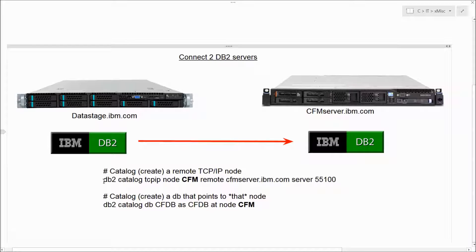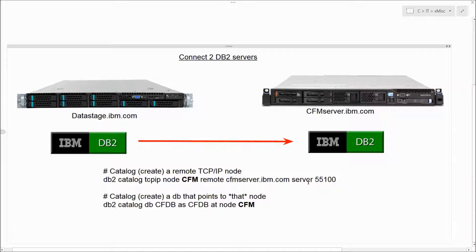That process in db2 is called cataloging. You're going to issue a command: db2 catalog TCPIP, which makes a connection over TCP/IP network connection to the second db2 node. That's why we mention the word node and give it a name - in our case we'll call it CFM. We have to give it a remote parameter and the name of the machine on the network: cfmserver.ibm.com, then server and port 55100. That's the default port - that's the first command, which creates the connection information over to the second machine.